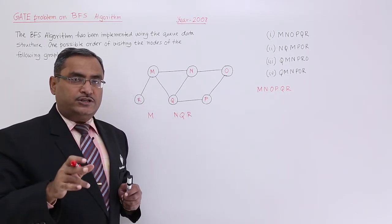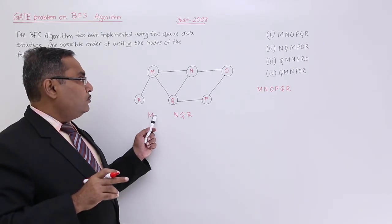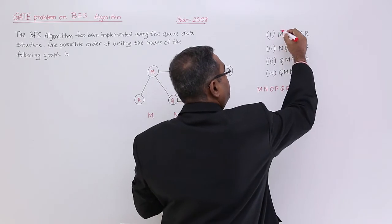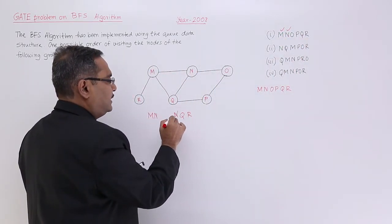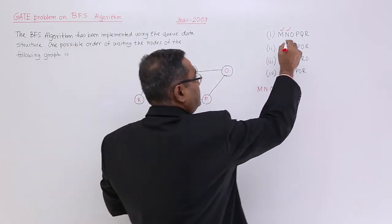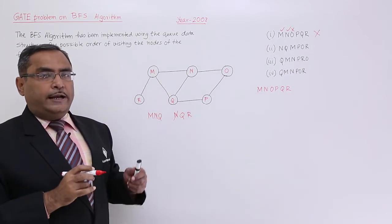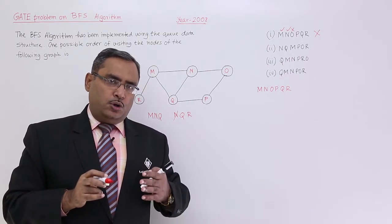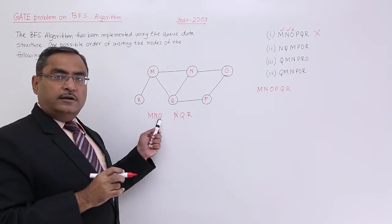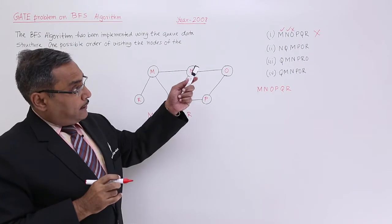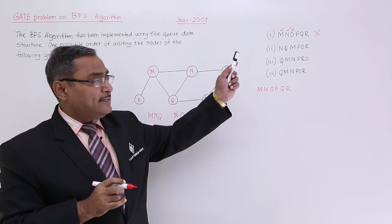Since the queue is first in first out, next time N will come out — N is matching. Then Q will come out, but it is not matching the given sequence, which shows O next. So this sequence is incorrect. From here I can infer that the next traversed node would be Q, but the option shows O and Q afterwards. So that sequence is incorrect.